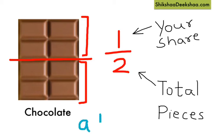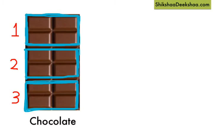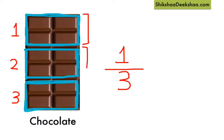We call this fraction a half. Now if you want to divide the chocolate among three friends, each piece is a fraction of the whole chocolate. The total pieces are three and your share would be one piece, so the fraction for each piece is one by three. We call it a third.